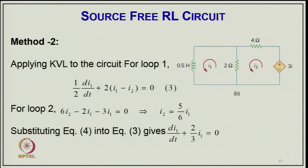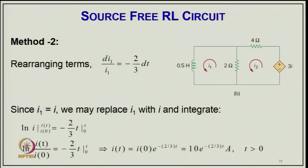Method 2 (direct KVL): applying KVL to loop 1 gives (1/2)·dI₁/dt + 2I₁ − 2I₂ = 0, and for loop 2: 6I₂ − 2I₁ − 3I₁ = 0, yielding I₂ = (5/6)I₁. Solving gives dI₁/dt + (2/3)I₁ = 0, confirming the same time constant. Since I₁ = I, rearranging gives dI/I = −(2/3)dt, which integrates to the same exponential solution.